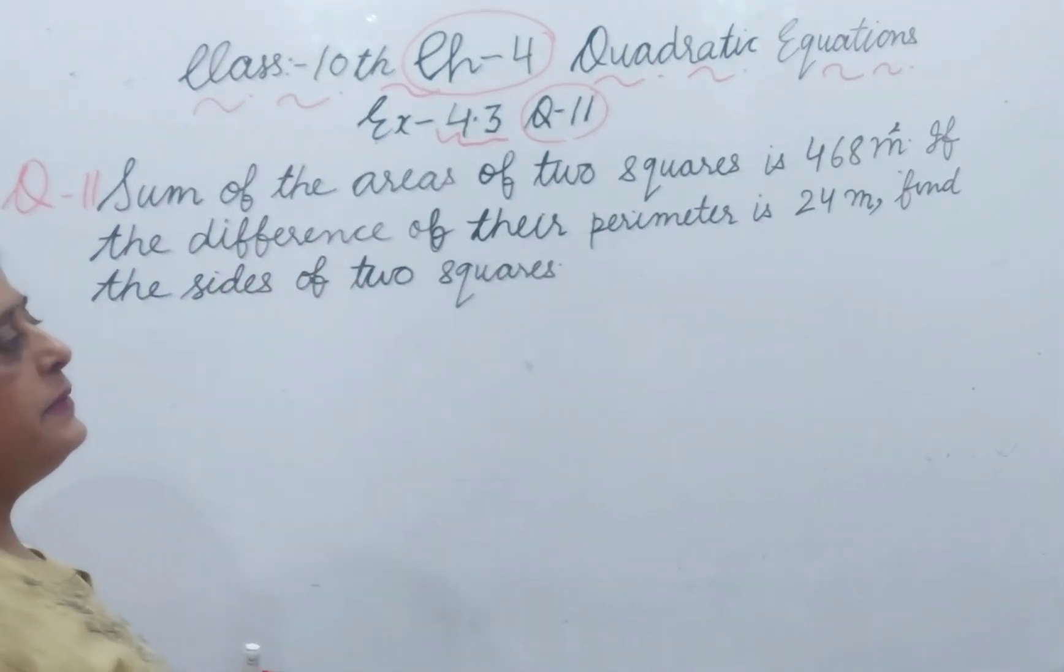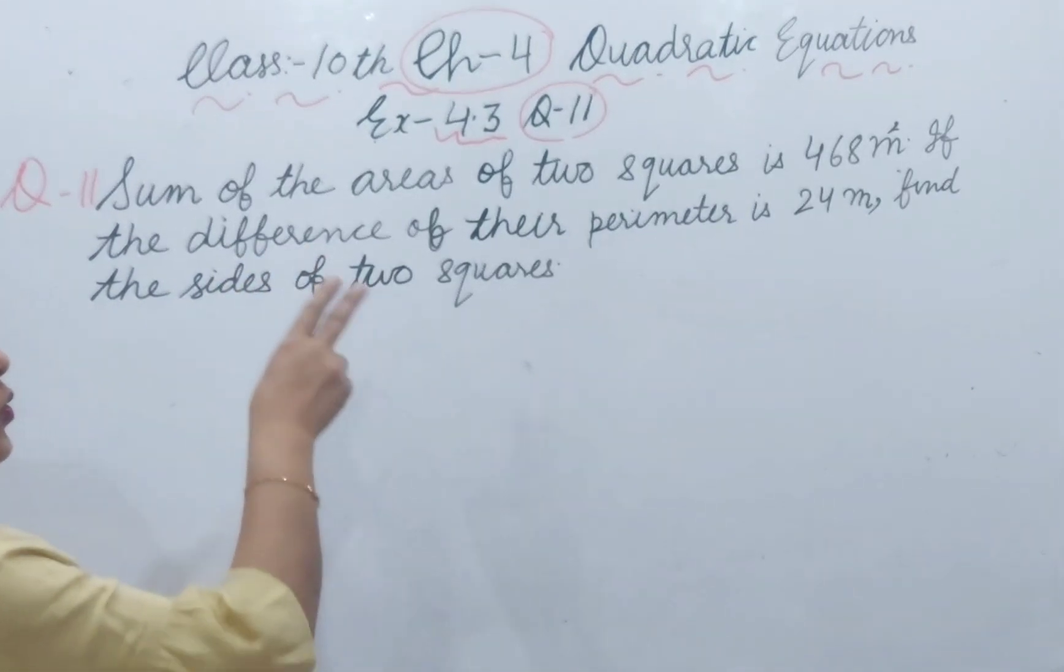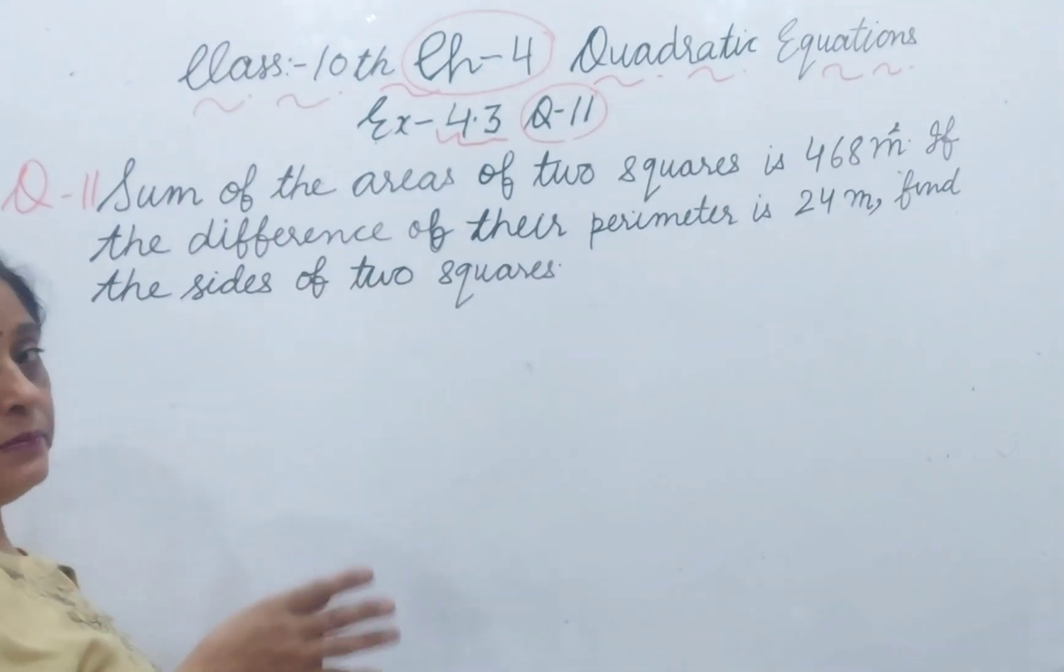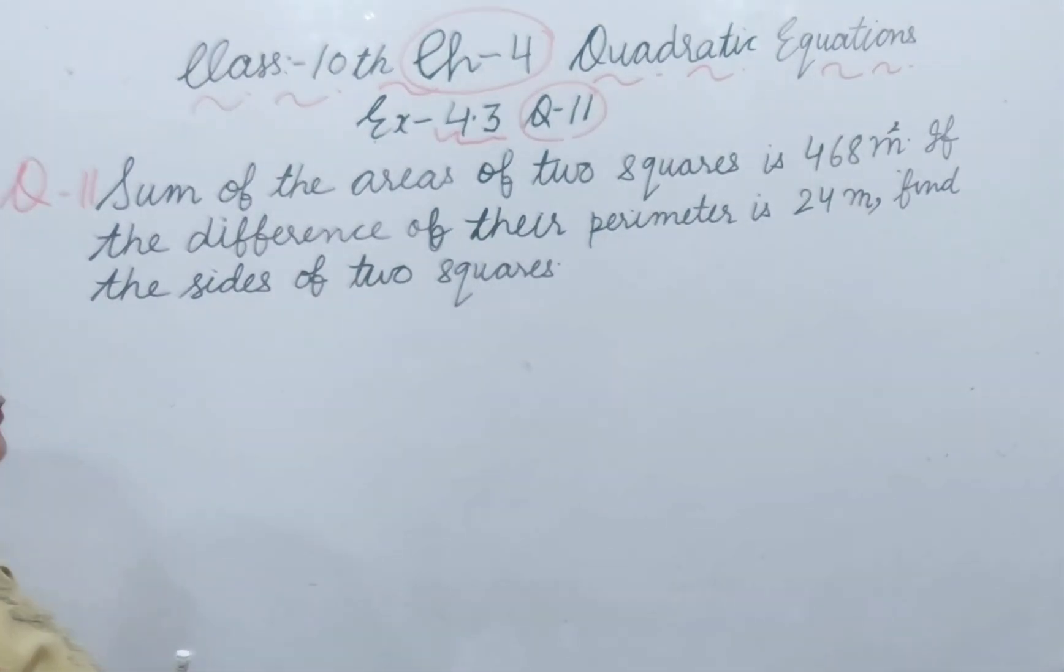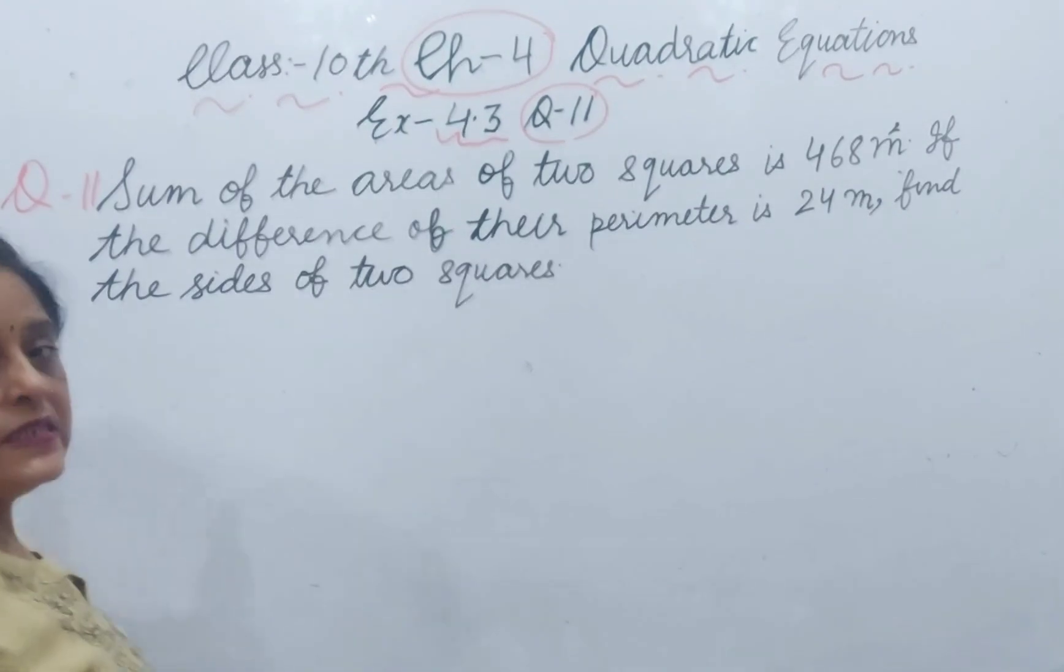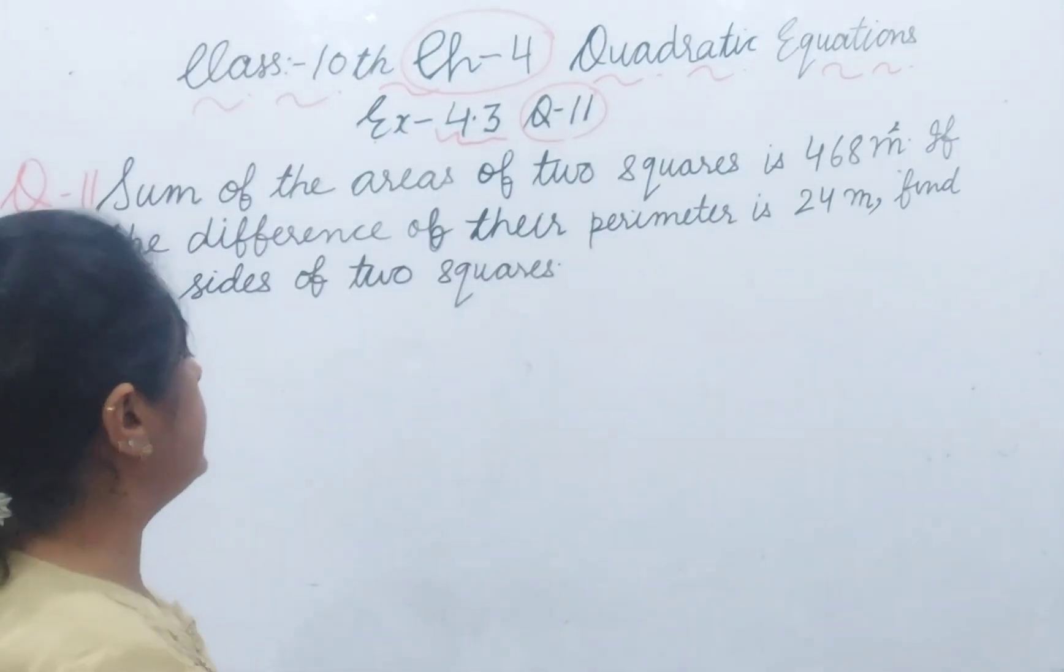If the difference of their perimeter is 24, unke perimeter ka difference, perimeter means perimeter, unka difference 24 meter hai. You have to find the sides of the two squares.